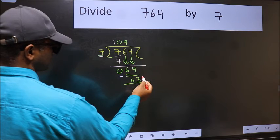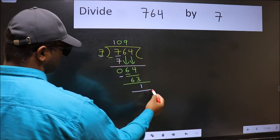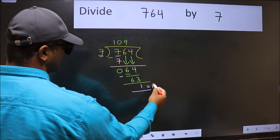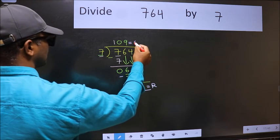No more numbers to bring down. So we stop here. This is our remainder and this is our quotient.